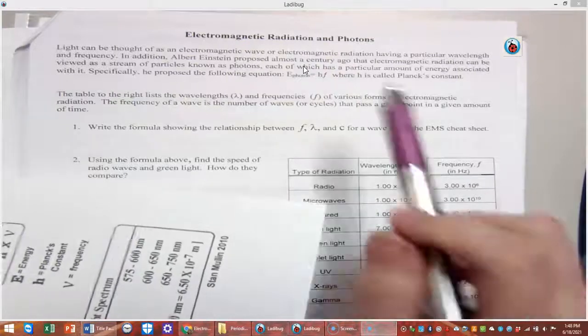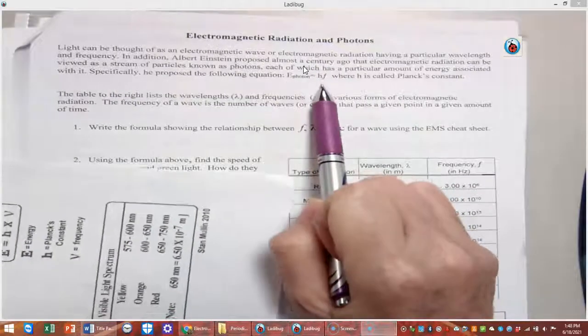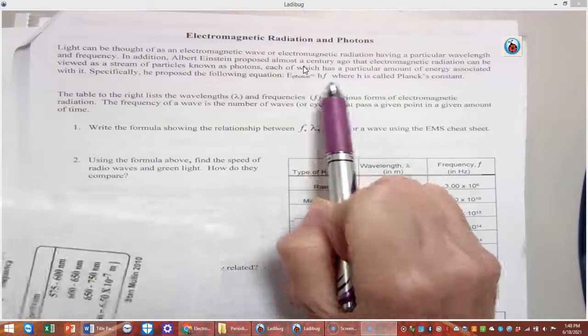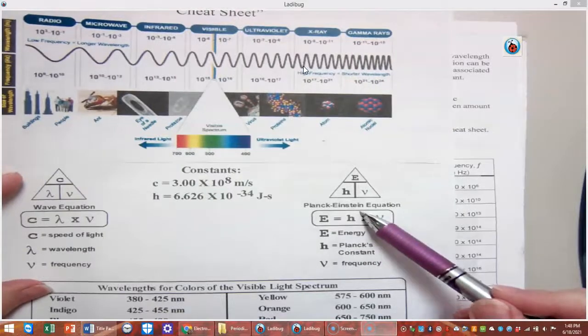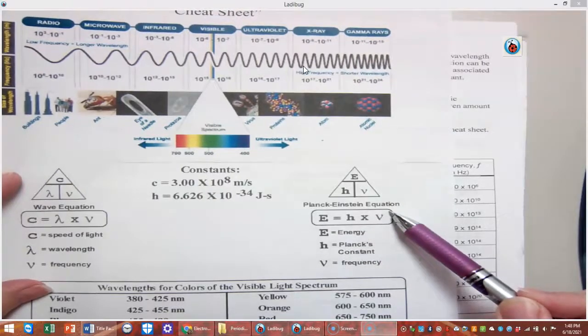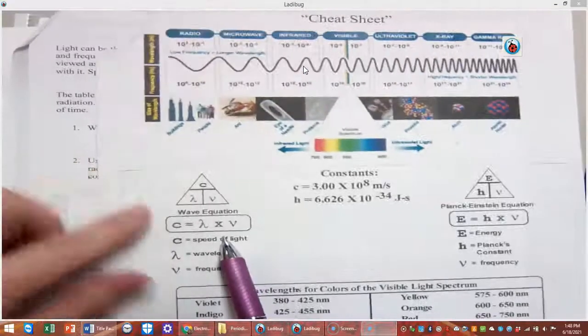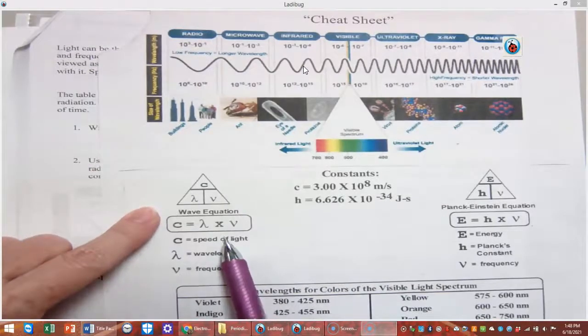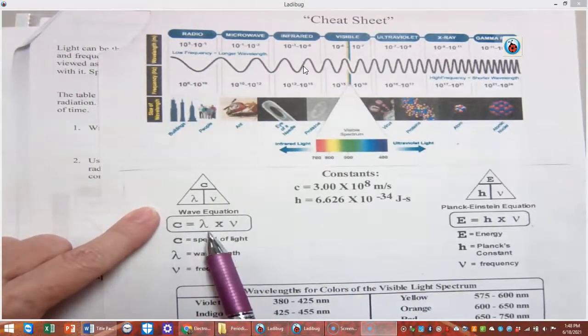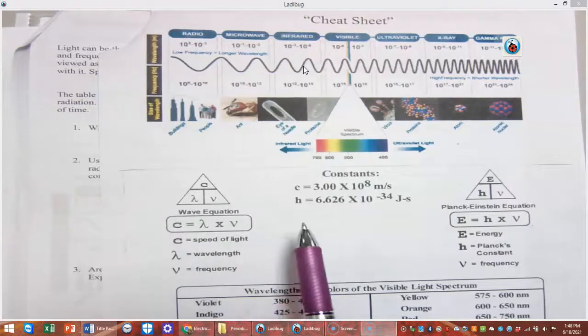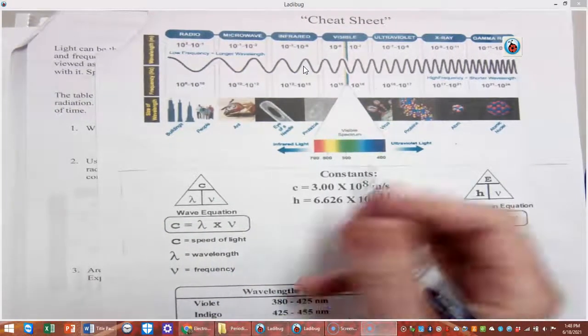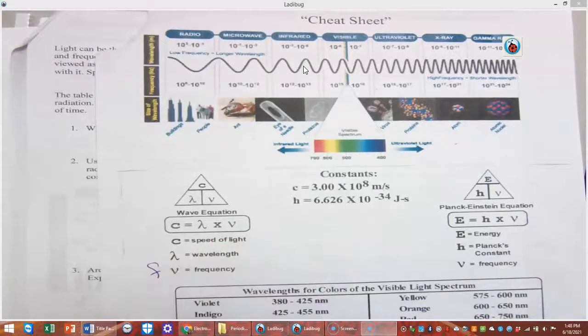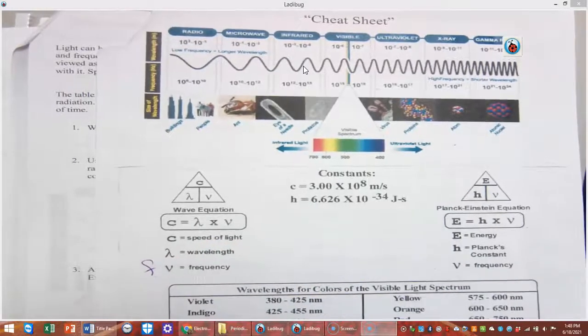And he gave us this equation that energy equals Planck's constant times frequency. And then we see that right here, the Planck-Einstein equation. We're going to be using that. And then the other equation we're using is the wave equation, where speed of light equals wavelength times frequency. Sometimes you'll see frequency as this letter, or you'll just have an F, it just depends on the book.